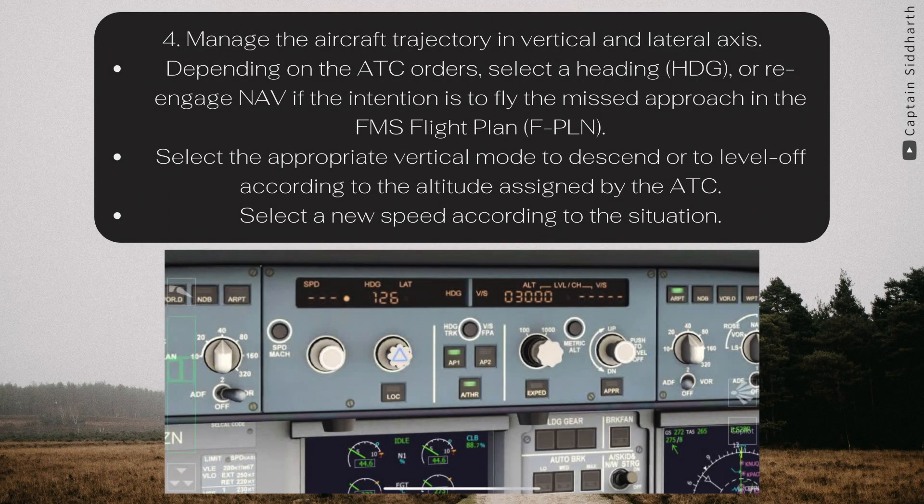Step 4: Manage the aircraft trajectory in the vertical and lateral axis. Depending on the ATC orders, select a heading, or re-engage NAV if the intention is to fly the missed approach in the FMS flight plan. Select the appropriate vertical mode to descend or to level off according to the altitude assigned by ATC. Select a new speed according to the situation.